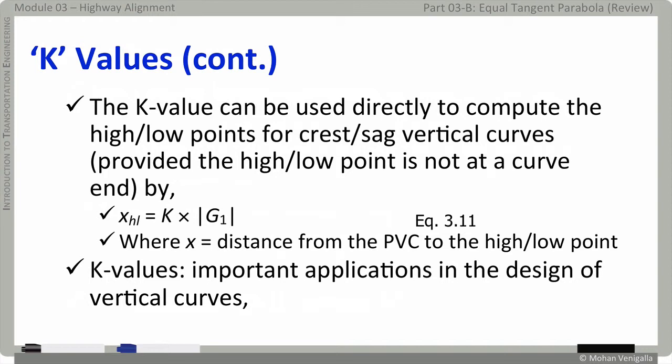You know why I call K values a beautiful variable? The K value can be used directly to compute the high or low point for crest or sag vertical curves. By using the equation, X at high/low equals K times modulus of G1, where X is the distance from PVC to the high/low point. And now you might think, is high point the same as the midpoint? It will be only if G2 and G1 are of the same magnitude with up or down. But if G1 and G2 have different values, the midpoint may not be the same as the high or low point. Listen to it carefully. The midpoint of the curve is not necessarily the same as the high or low point on the curve. So the K values are important for application in design of vertical curves.